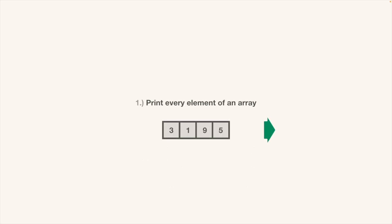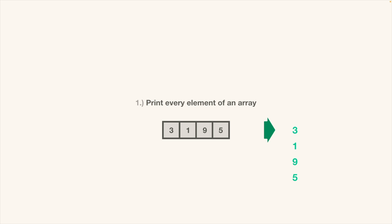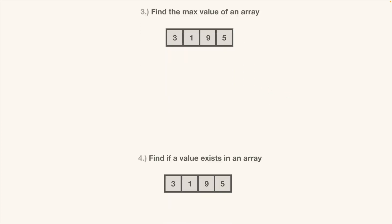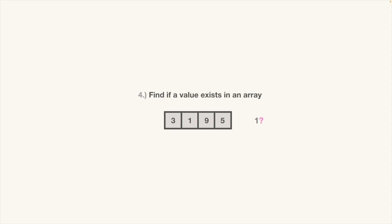Let me show you what a good problem progression looks like. If you're totally new to data structures and algorithms, since the first topic is arrays, start with these four array problems first. Problem one: print every element of an array. Problem two: find the total sum of an array. Problem three: find the maximum value of an array. The point of these problems is to solve them manually, without using built-in methods. You won't find these four problems on LeetCode. You might think they're way too easy to be useful, but they serve a purpose you'll see in a bit.